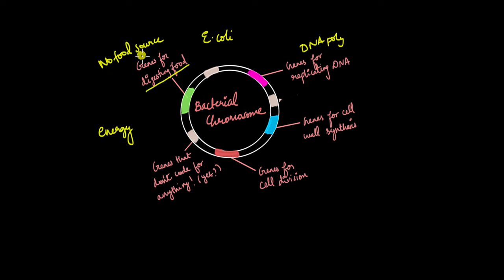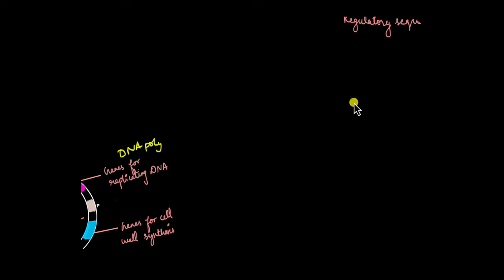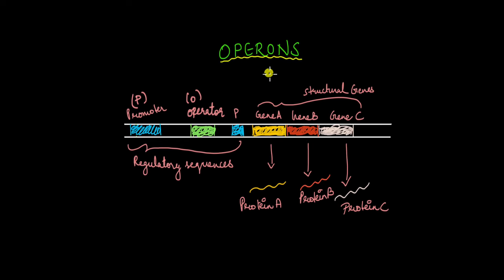For example, when there is no food source, there is no point in secreting the enzyme needed to digest food — it would just be a waste of energy. So the way by which E. coli tries to conserve energy is by regulating the expression of its different genes. It makes sure that genes are expressed only when required and not expressed when the proteins are not required. And one way the bacterium accomplishes this is with the help of different operons.